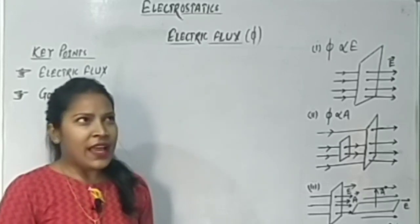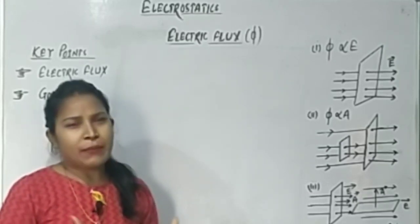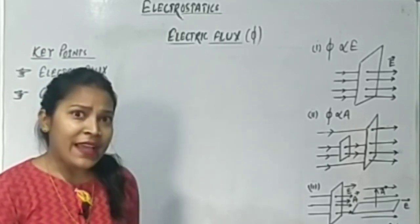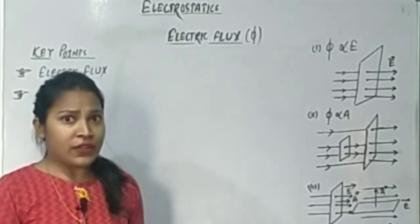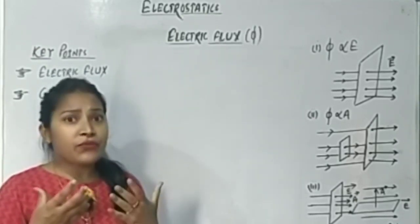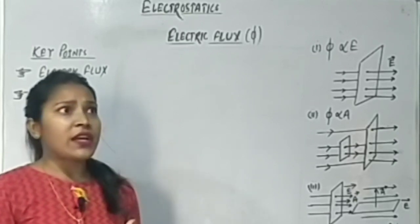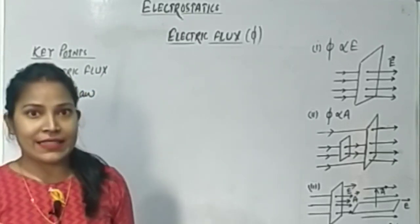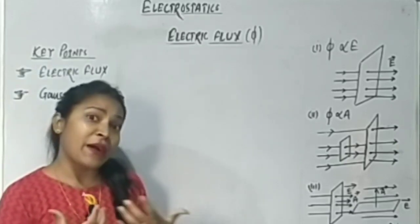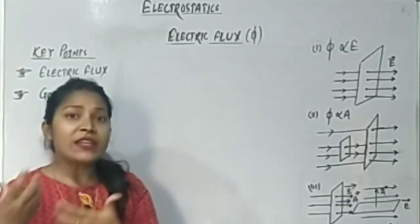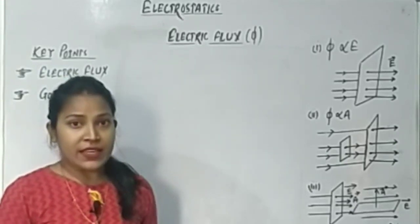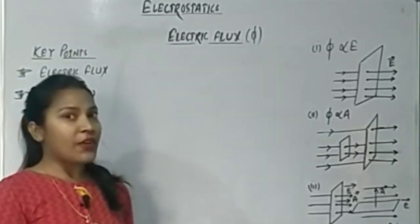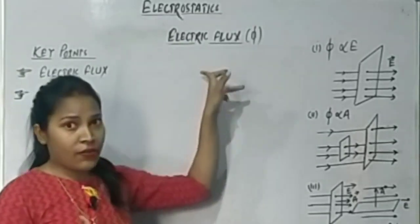Flux means a kind of flow — something which is flowing. So what is electric flux? It is a property of electric field. The definition of electric flux is: the total number of field lines that pass normally through a surface area. That is called electric flux.